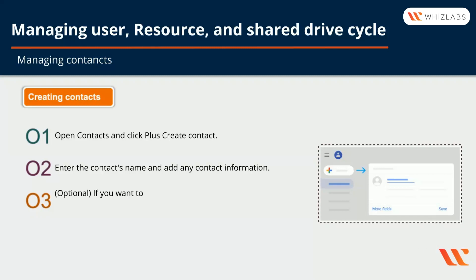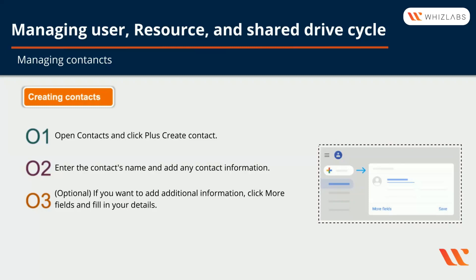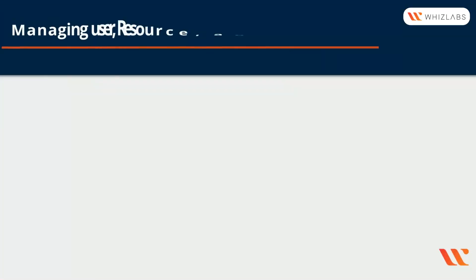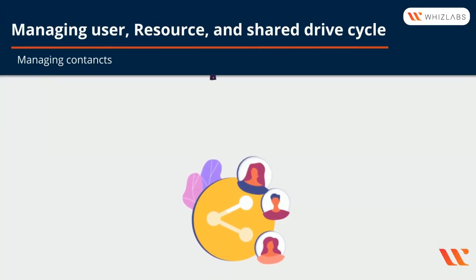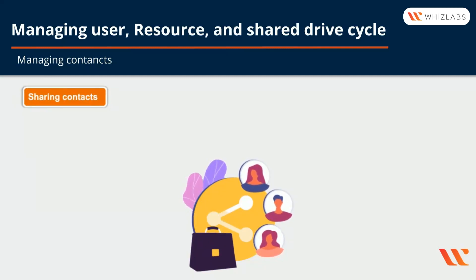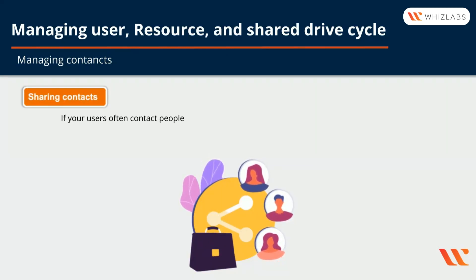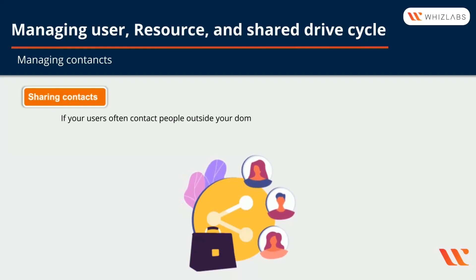The next step is optional — if you want to add some additional information such as a nickname or maybe a mailing address, there are more fields where you can fill in the details. Finally, you can simply click on the save button.